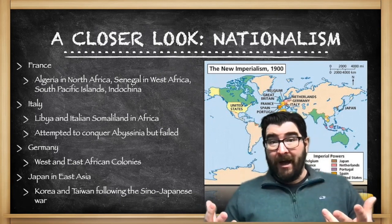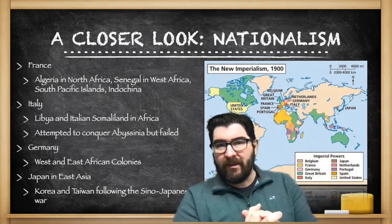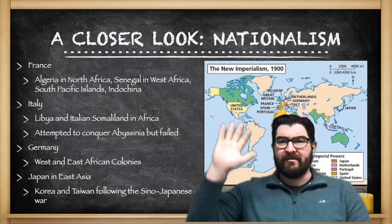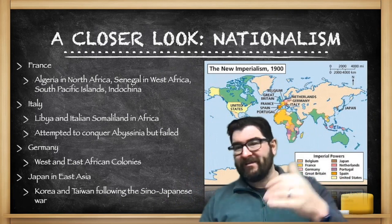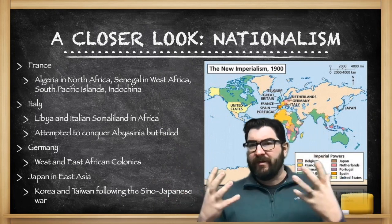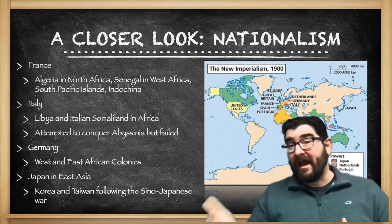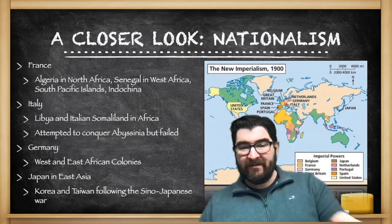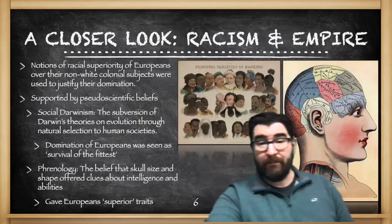Germany, as a newer country — a brand new country in the 1870s — said they wanted their place in the sun as well, and began to take territories in West and East Africa. And then Japan, the exception to the European model for imperialism. After the Sino-Japanese War in 1894, Japan took Taiwan and eventually took complete control over the Korean peninsula.